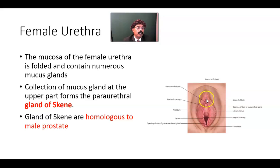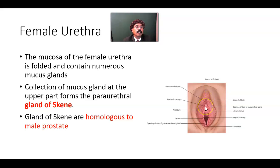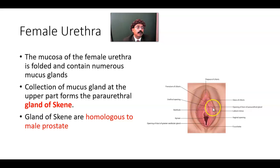From the clitoris, approximately 2.5 cm inferiorly is the urethral opening in the vestibule of the vagina. This opening can be exposed by retracting the labia minora on both sides.